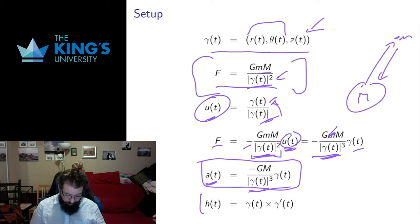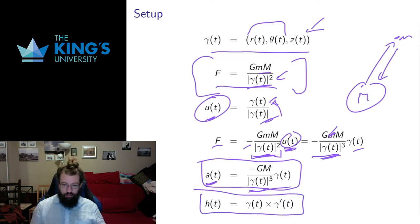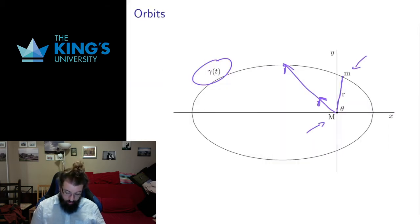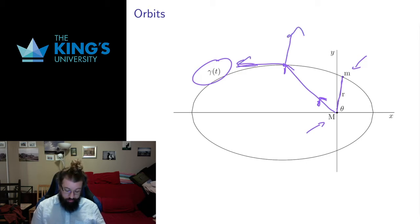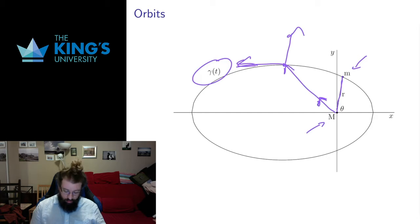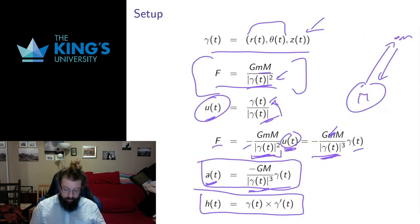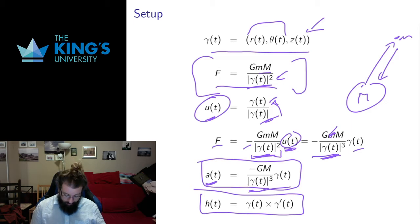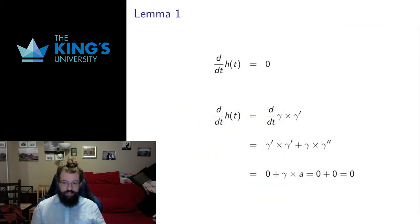I want to define H to be the cross product of gamma with its tangent gamma prime. In this diagram, gamma and its tangent are both in two dimensions, so the cross product points in the Z direction. H is going to be some vector in the Z direction — the cross product of gamma and its tangent — and that's going to turn out to be a useful thing to define as gamma moves around.